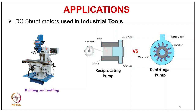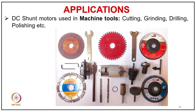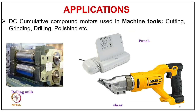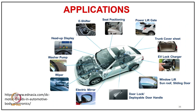DC shunt motors are used in industrial tools — typically drilling, mining, machine tools, lathes, respirator pumps, and centrifugal pumps. DC motors are also used in machine tools for cutting, grinding, drilling, and polishing. Cumulative compound motors are used in rolling mills, punch presses, and shears. Small DC motors with permanent excitation are used in four-wheelers like electric cars for most appliances, with gears to provide high torque.